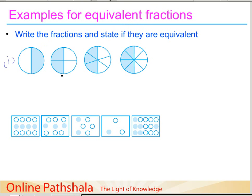I would just straight away have a visual check at these four figures and look at the shaded portion. What is clearly visible is that in all these four figures, half of the circle has been shaded — that is the same for all four figures. What is different is the number of parts into which the circle is divided. So that is a visual check, and it tells us that the fractions we are going to represent for each of these cases are going to be equivalent.